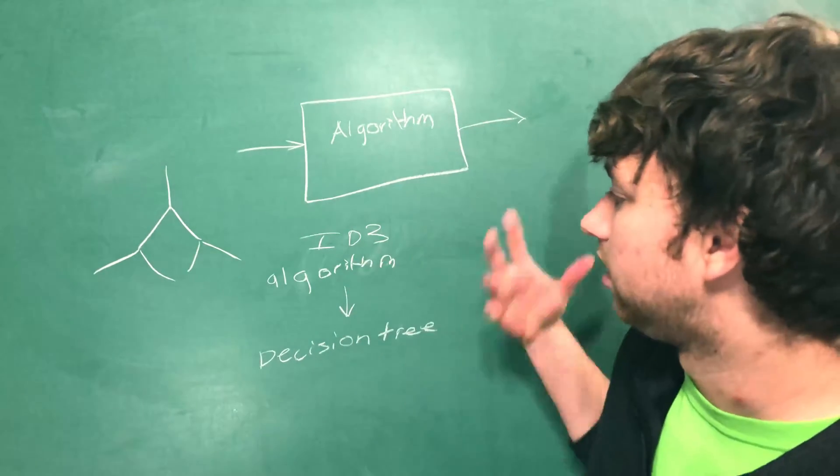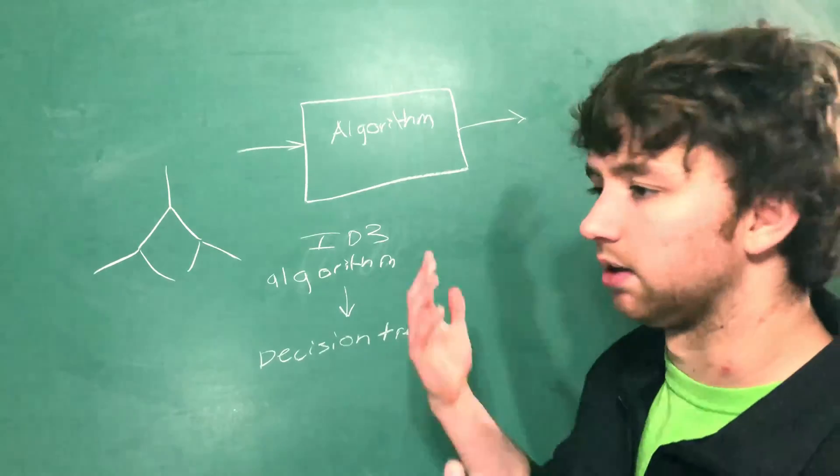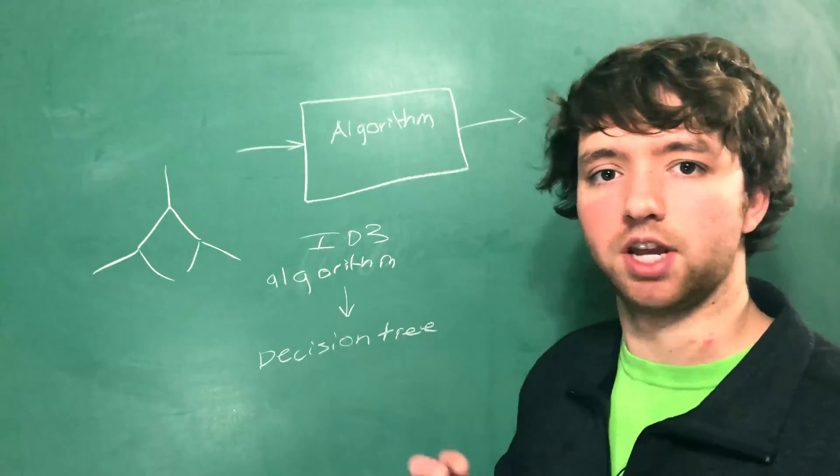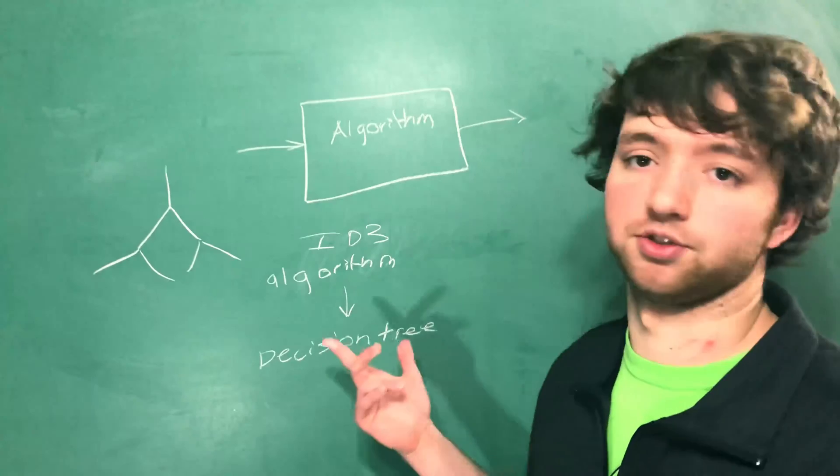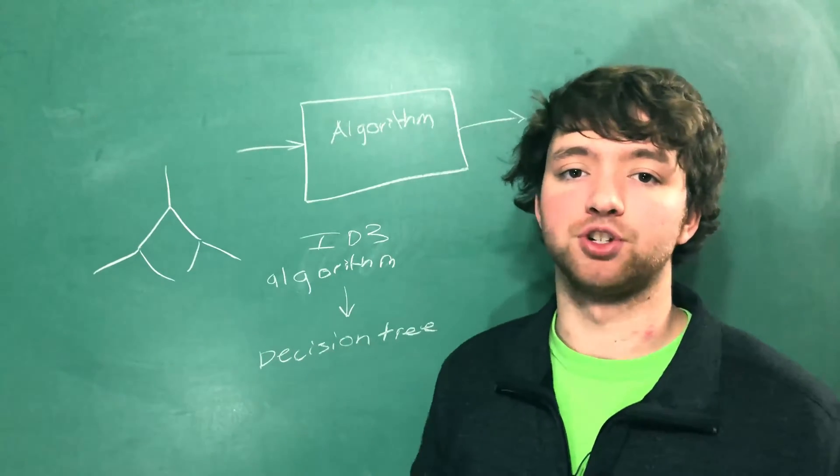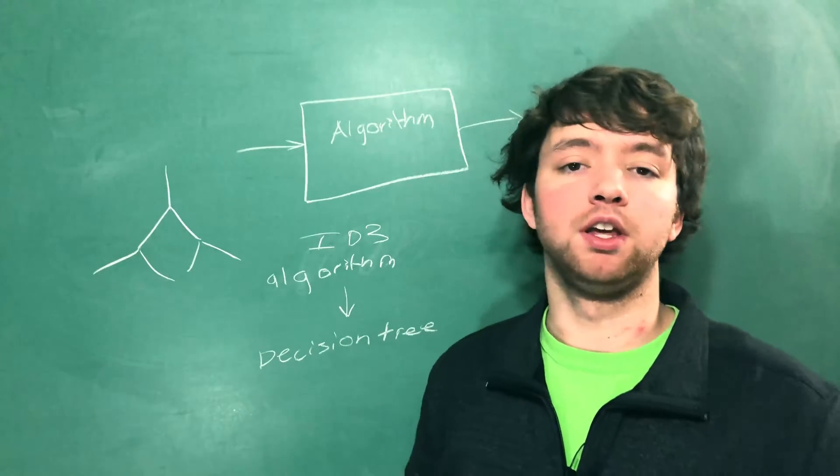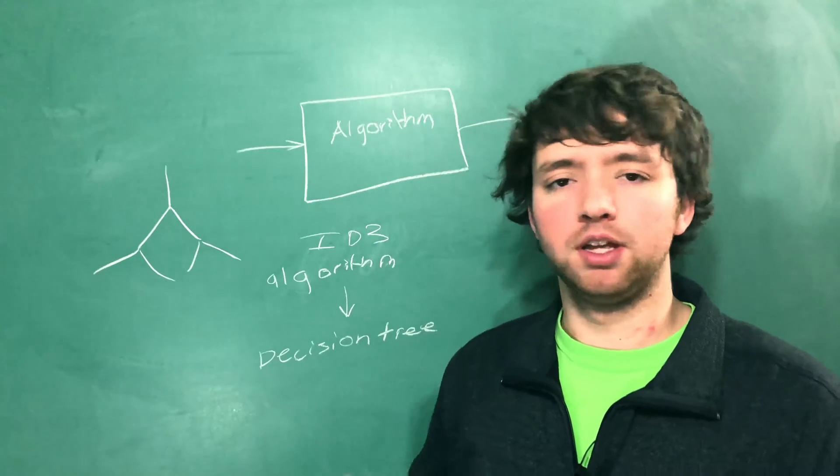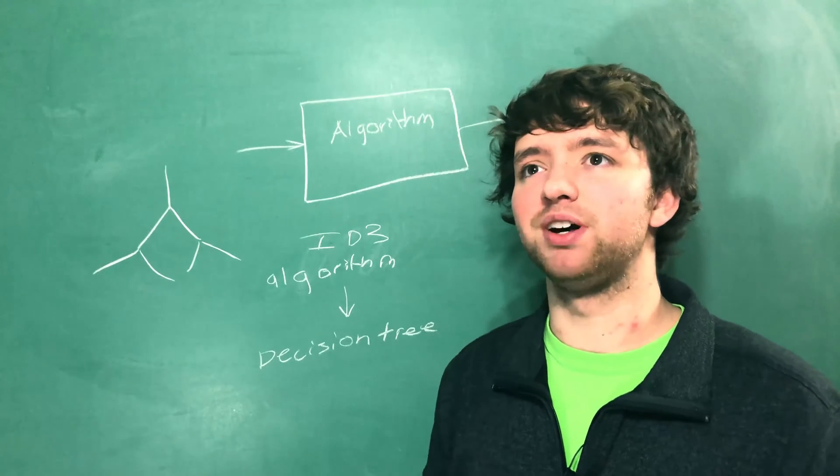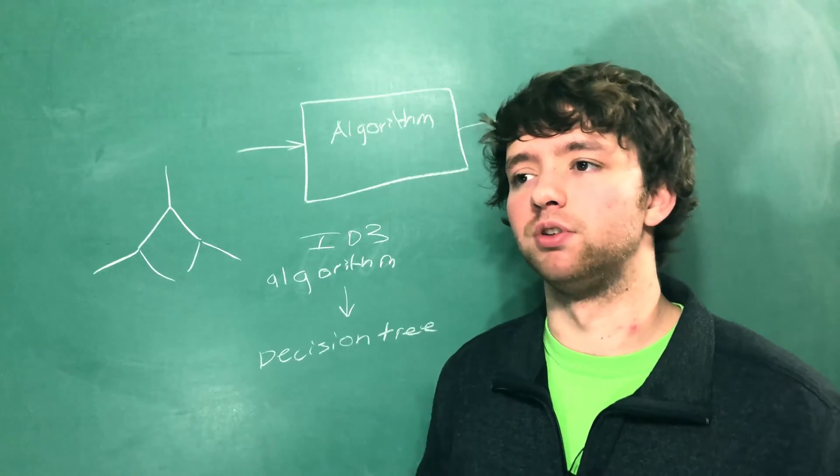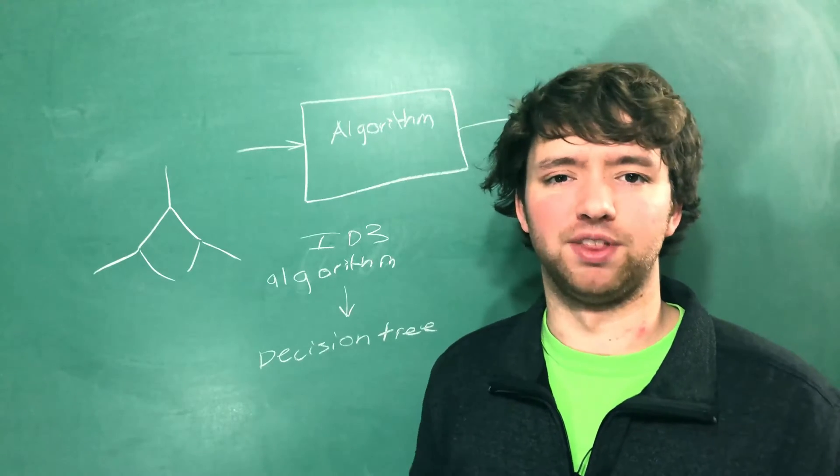The ID3 algorithm doesn't actually do anything like predictively. It just takes our data, outputs a decision tree. As you continue your study of machine learning, the difference between a model and an algorithm may become clear. But more than likely it's not going to really matter that much.